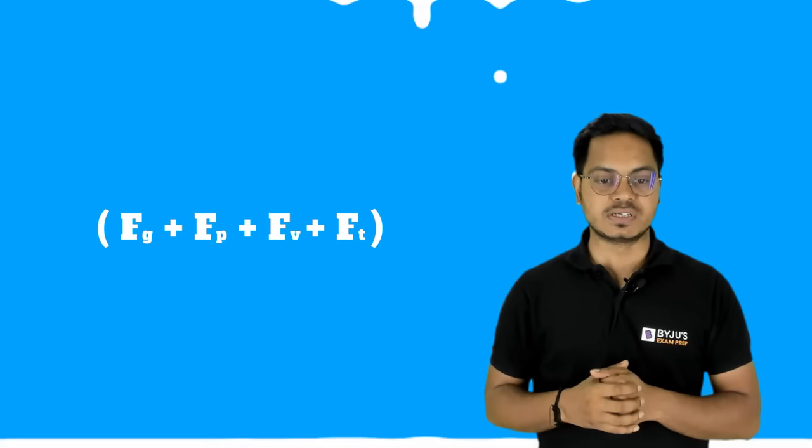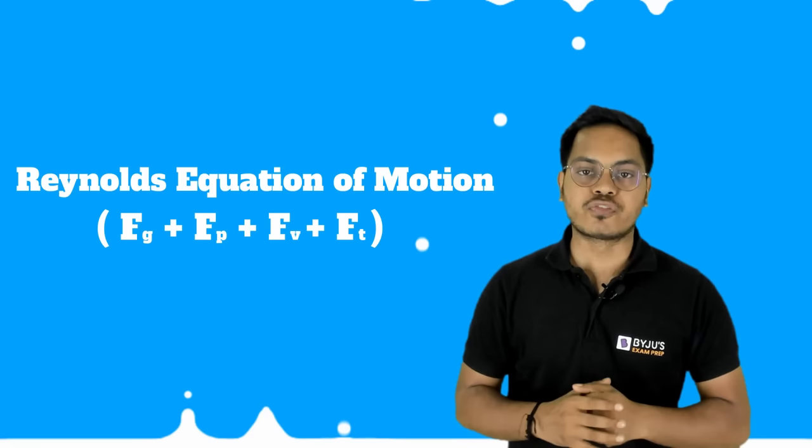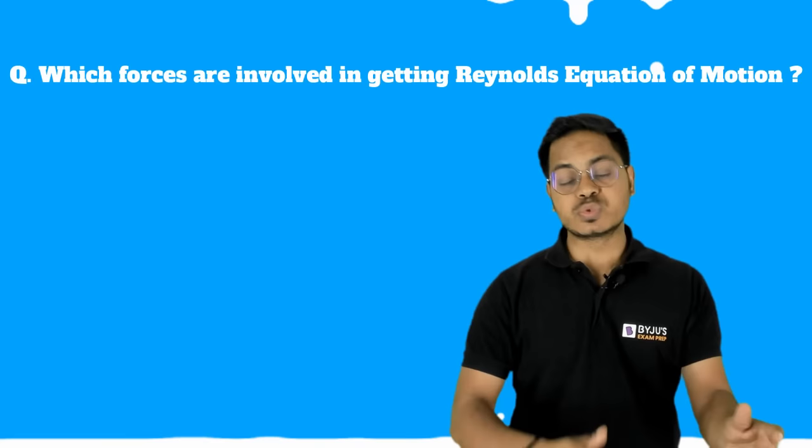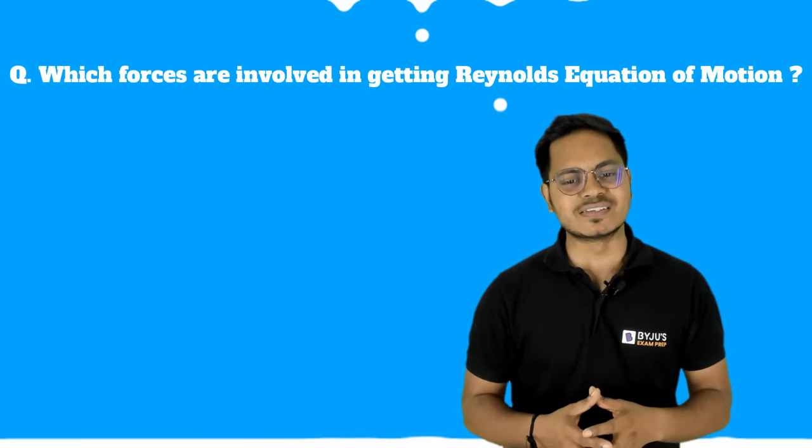Out of all these — gravity, pressure, viscous, turbulence, and compressibility — if we neglect the force due to compressibility, we are left with gravity, pressure, viscous, and turbulence forces. These together give us the Reynolds equation of motion. This should be known to you; if asked in an examination, the answer is: gravity force, pressure force, viscous force, and turbulence force are involved in the Reynolds equation of motion — not the force due to compressibility.